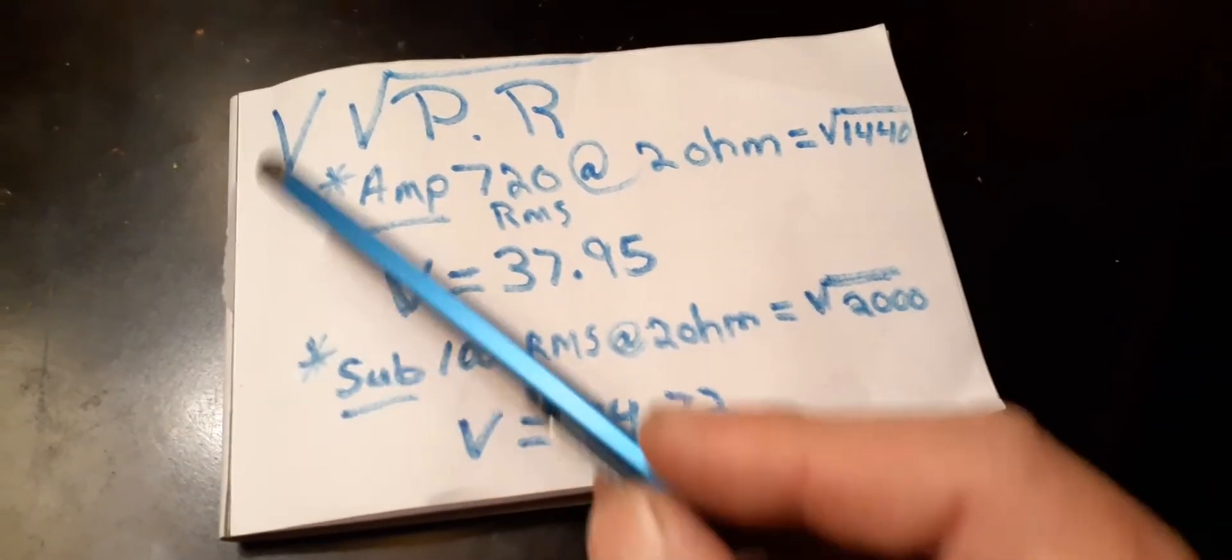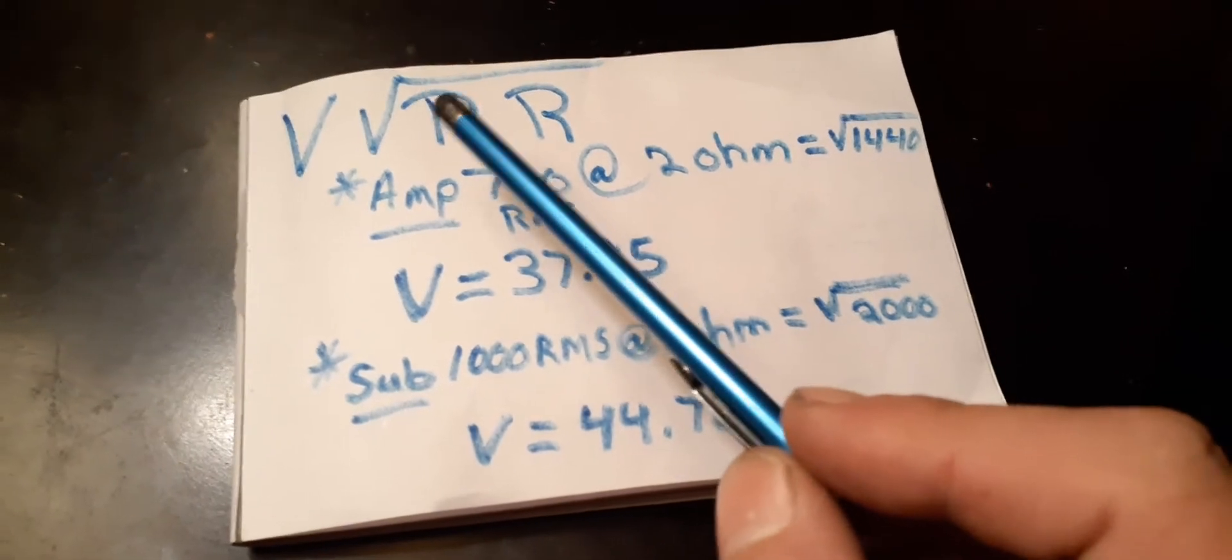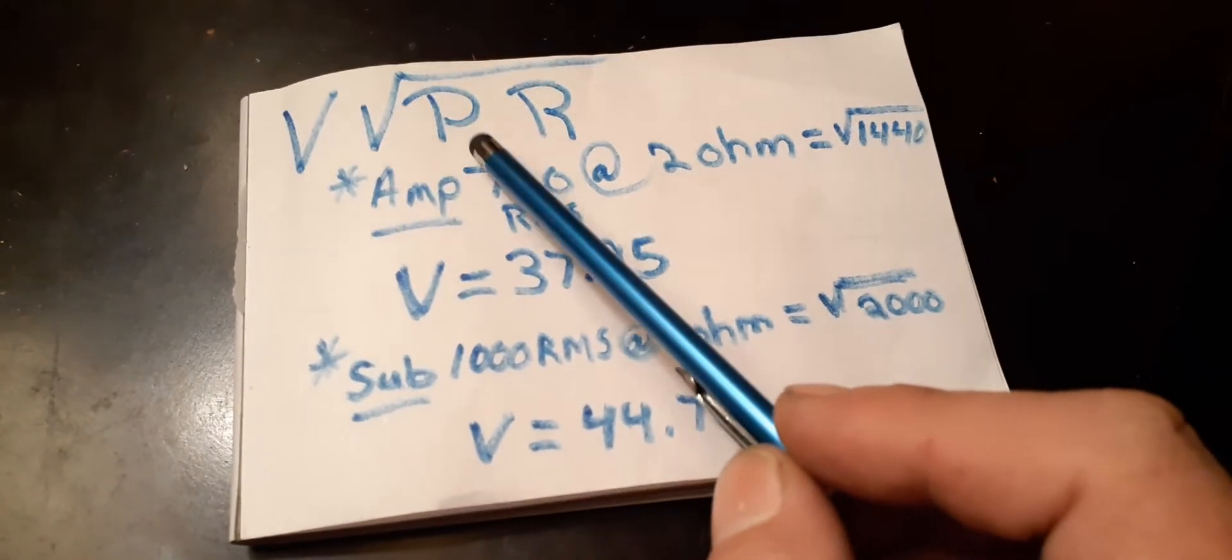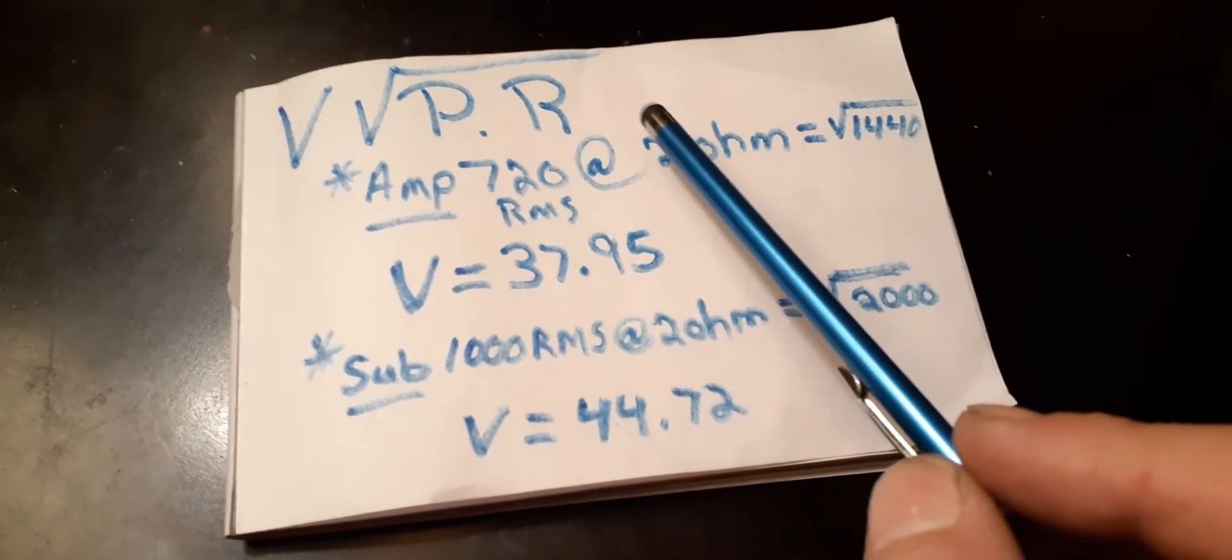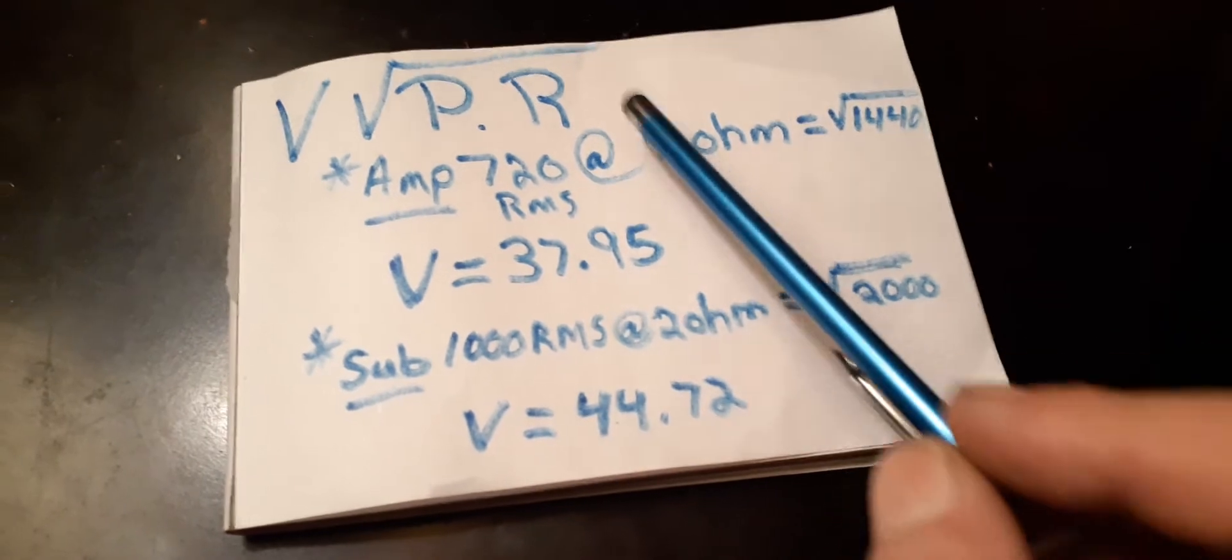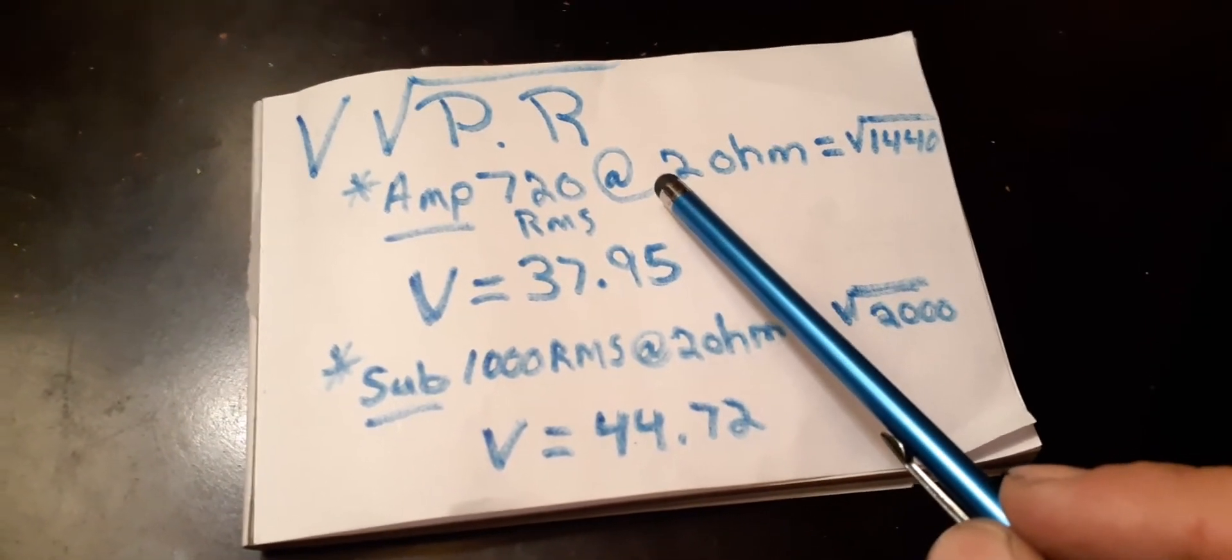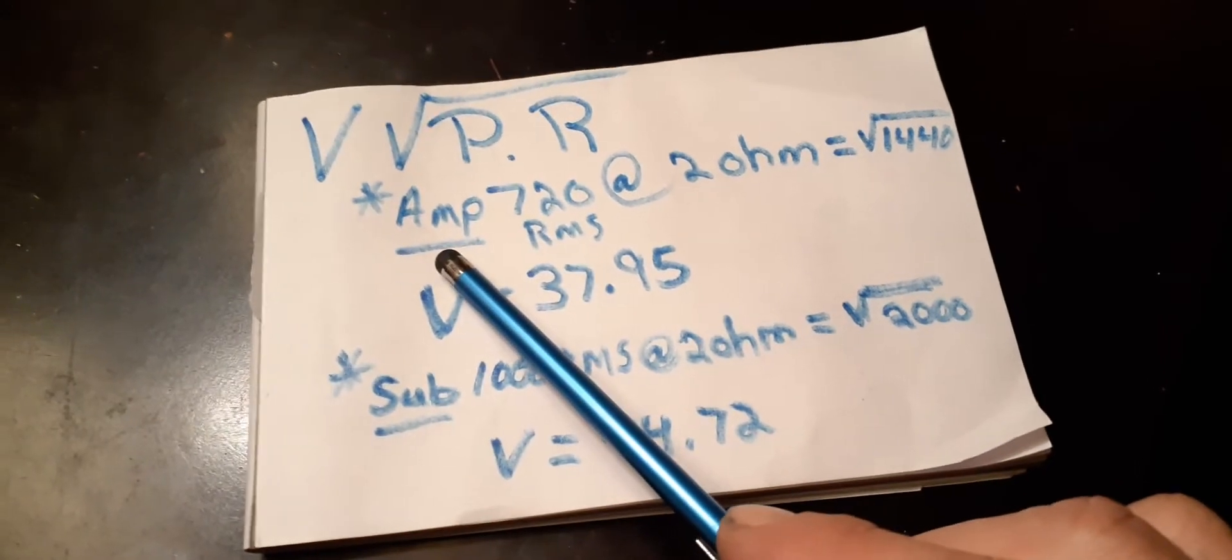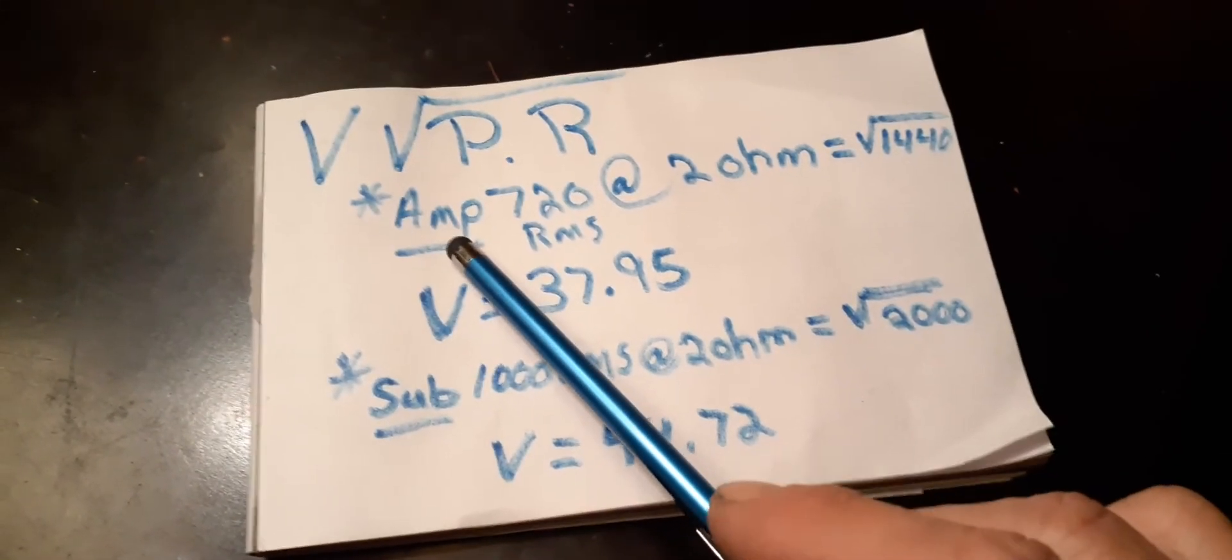That's how I do it. It's your desired voltage, and then you do power times resistance, whatever you got your subs wired down to. I got a 4 ohm sub but I got it wired down to 2 ohms, and I use the amp rating at 2 ohms.